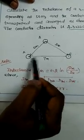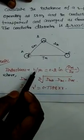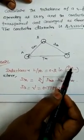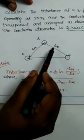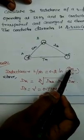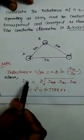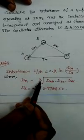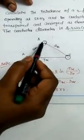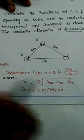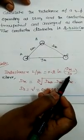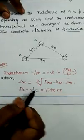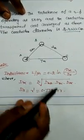These are the distances given. Based on the conductor arrangement, we assume the conductor order. The inductance calculation formula we are going to use is: L = 0.2 ln(Dm / Ds). This Ds value is the GMD value.